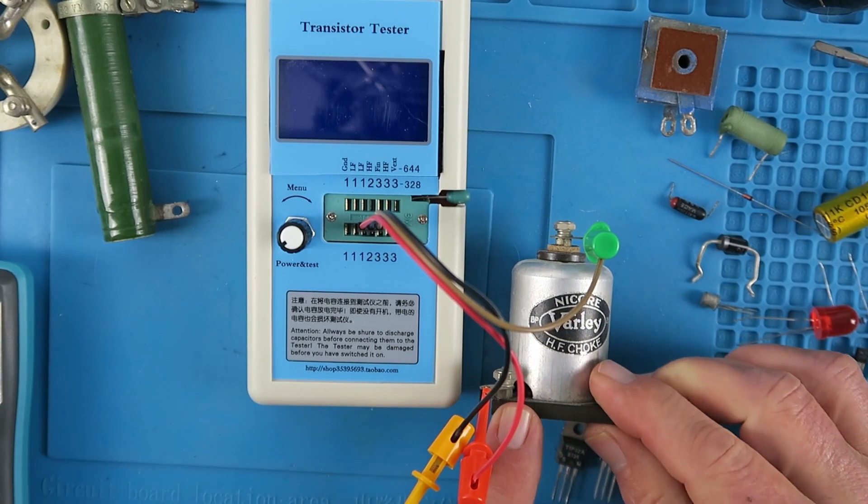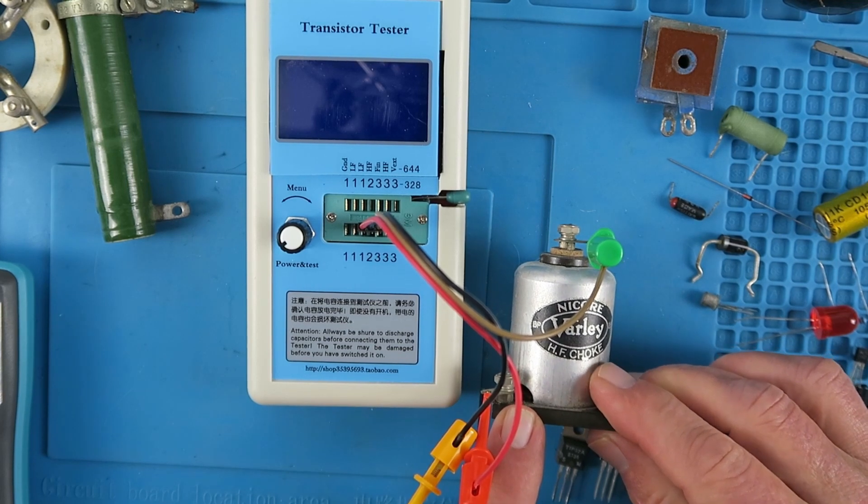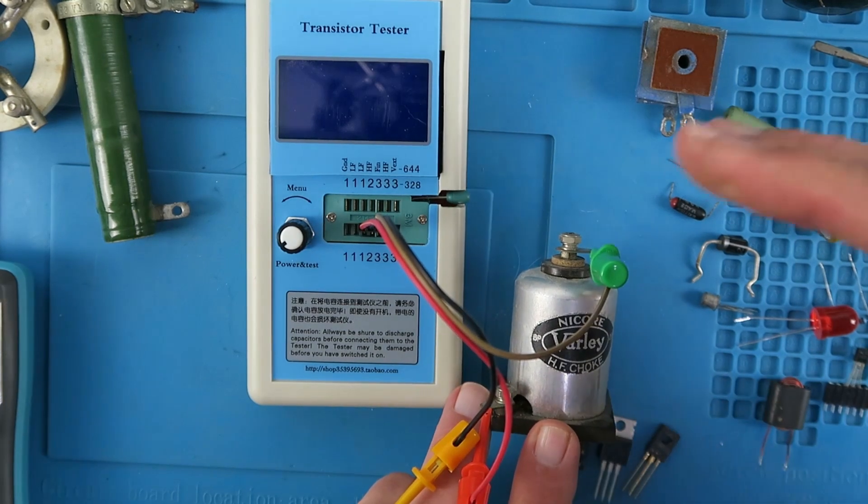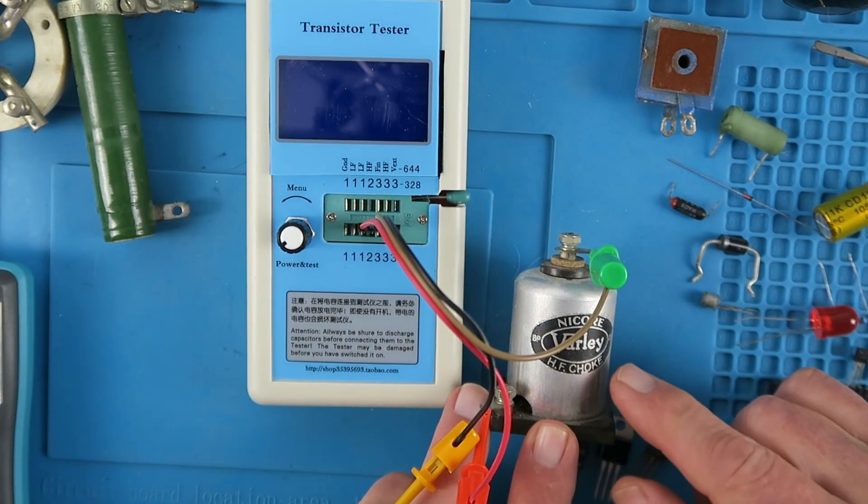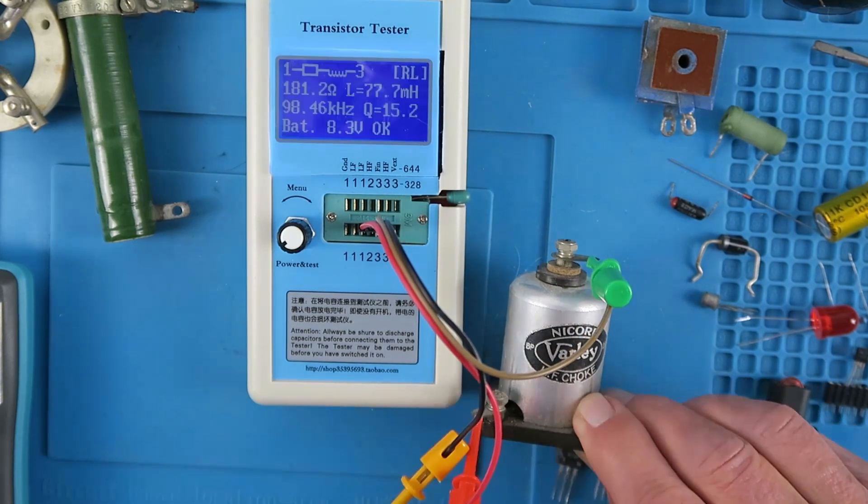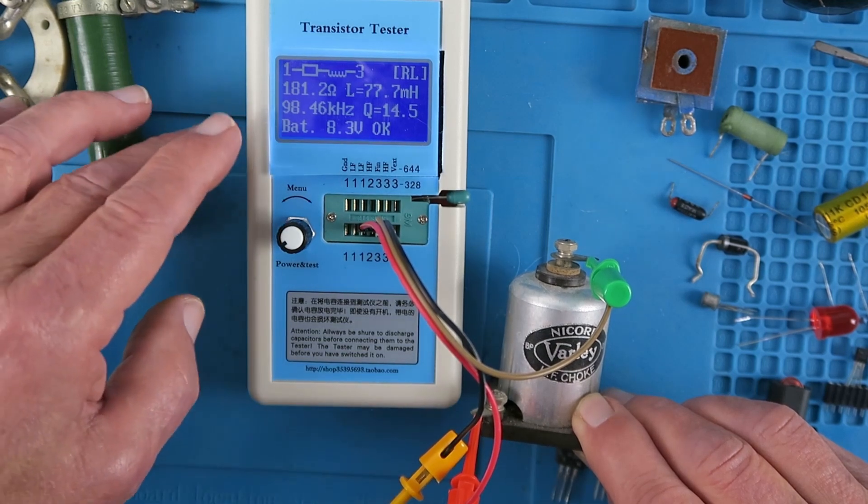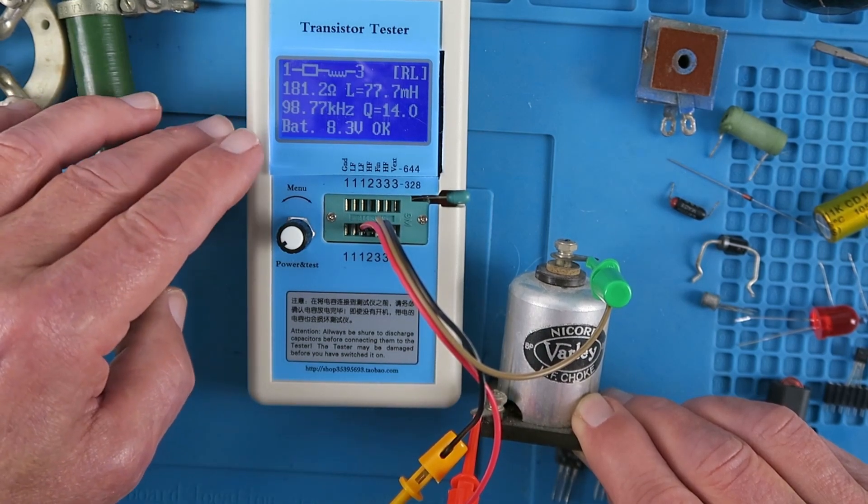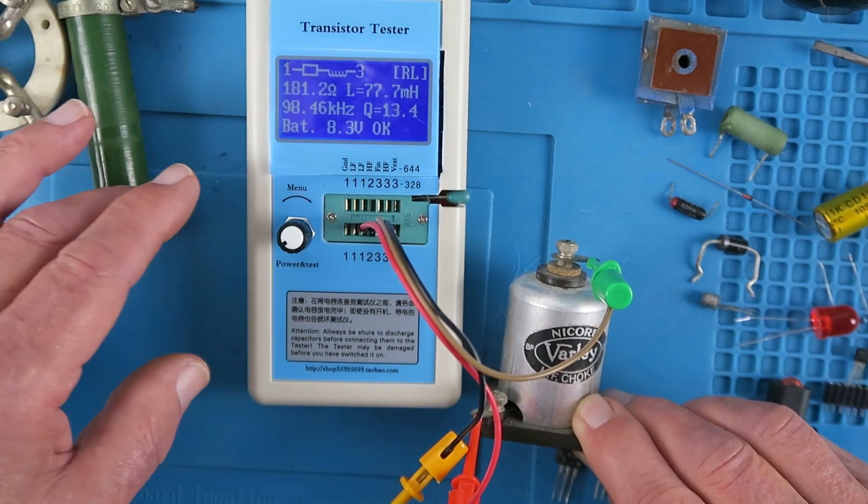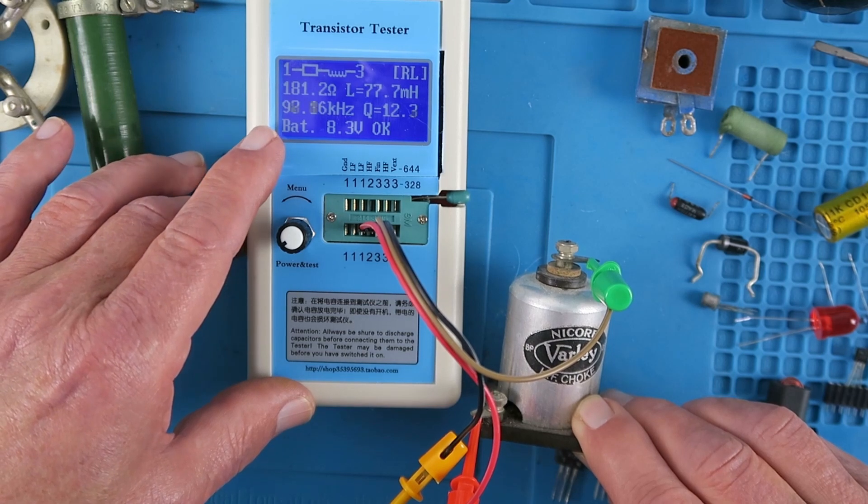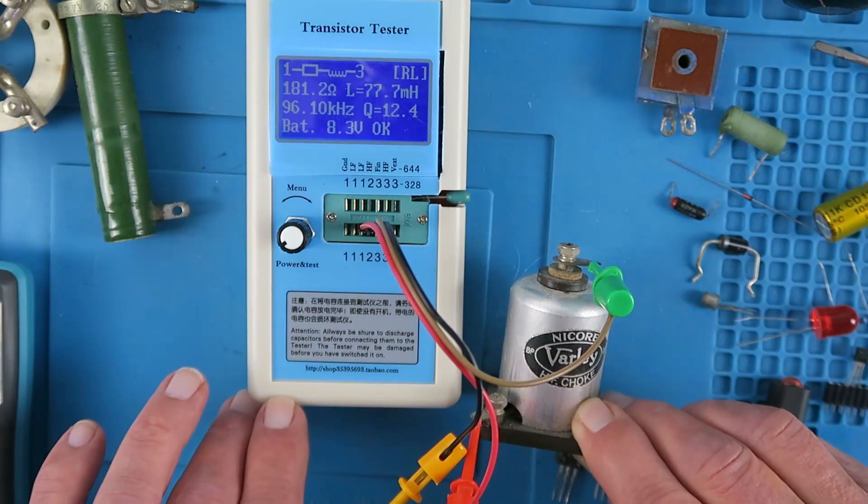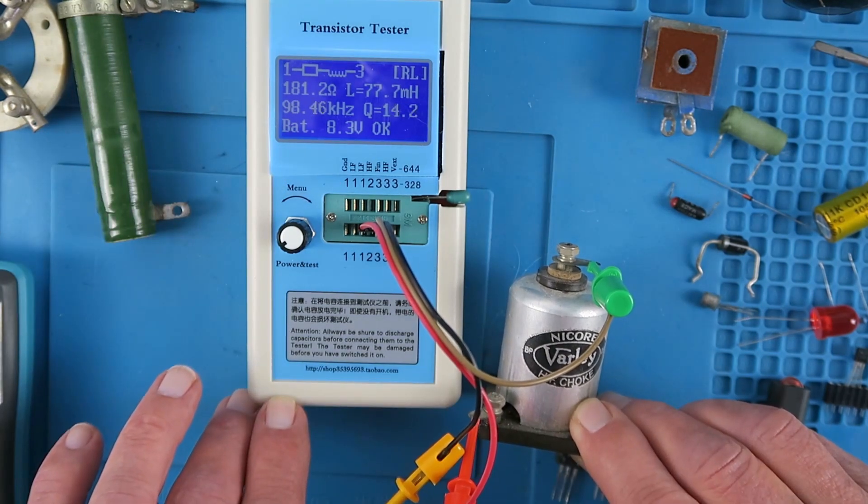This high-frequency choke is just a specialized type of inductor used in radio circuits to choke off the higher frequencies. So it will only pass DC and the lower frequencies which are required. Testing the component clearly shows it's an inductor with 181 ohms resistance, an inductance of 78 millihenrys, and a resonant frequency of around 100 kilohertz, and a Q of around 12. Once again, this is still a valid component.